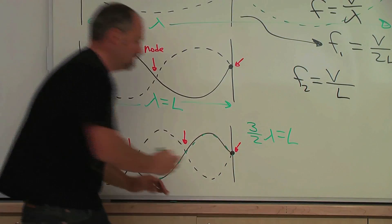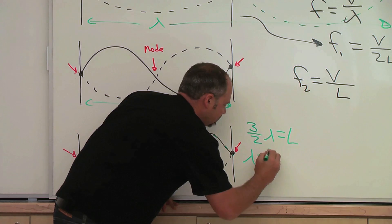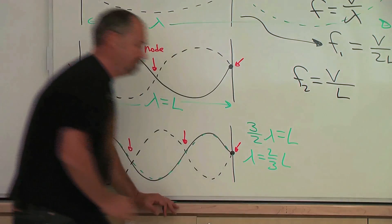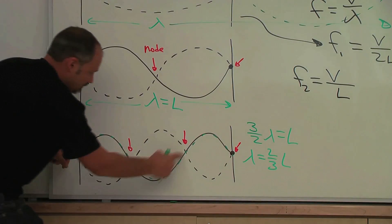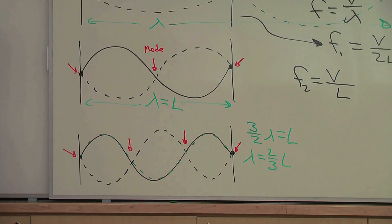Therefore, one wavelength is two-thirds of the length, and that makes sense. This is two-thirds of the way to the other side.